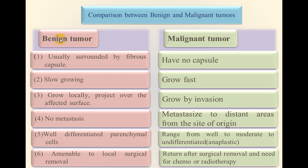Comparison between benign and malignant tumors: benign tumors are usually surrounded by a fibrous capsule. Most benign tumors are encapsulated, but not all — for example, leiomyoma is a benign tumor originating in the myometrium that is not usually surrounded by a fibrous capsule. Malignant neoplasms mostly have no capsule. Some slowly growing malignant neoplasms also have a capsule, but can be differentiated from benign neoplasms by the presence of microcapsular invasion of malignant tumor cells into the capsule.